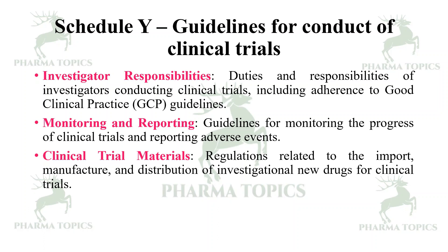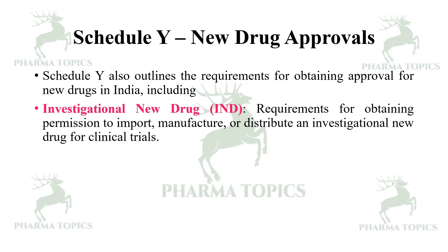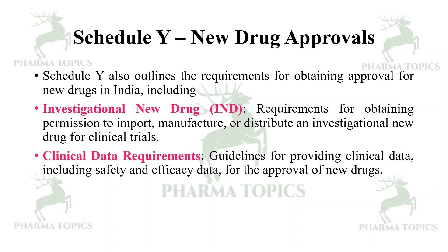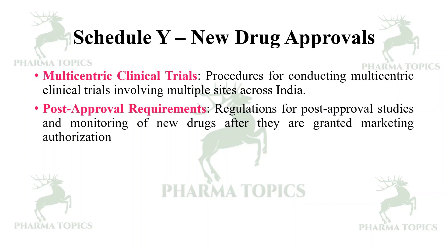Under new drug approvals, Schedule Y outlines the requirements for obtaining approval for new drugs in India, including the investigational new drug. It provides requirements for obtaining permission to import, manufacture, or distribute an investigational new drug for clinical trials, as well as guidelines for clinical data including safety and efficacy data for new drug approval. It also covers guidelines for conducting multi-centric trials involving multiple sites across India, and regulations for post-approval studies and monitoring of new drugs after they are granted marketing authorization.